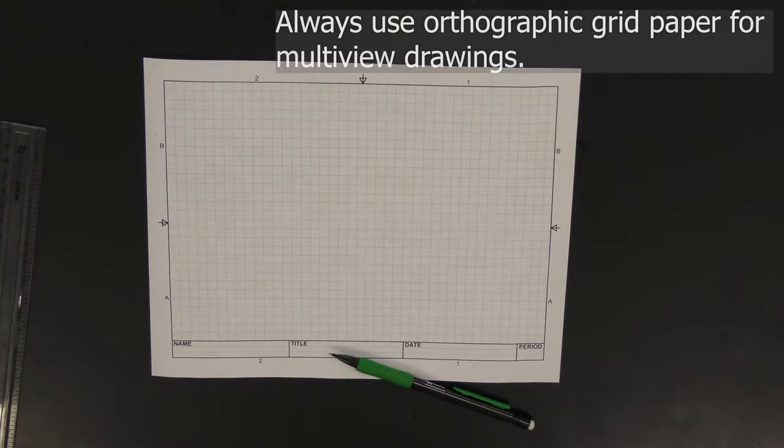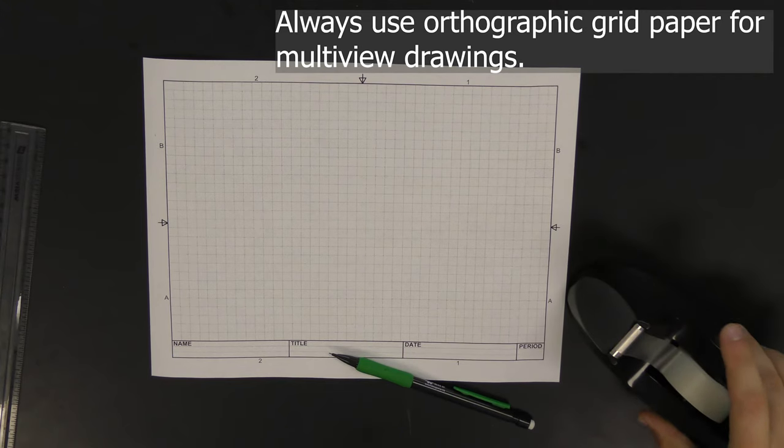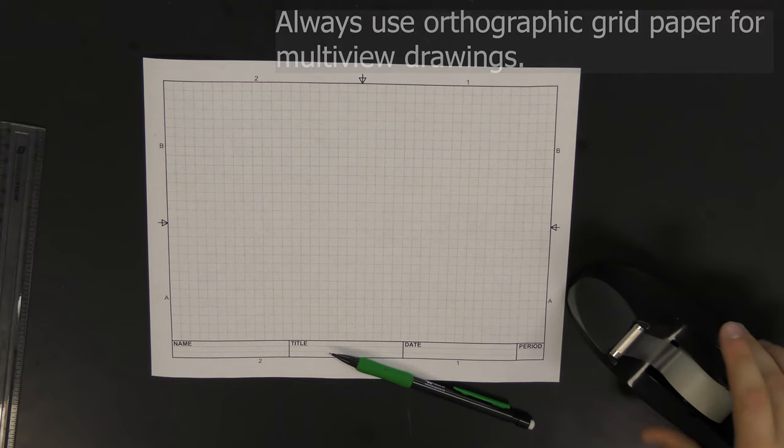Okay, so when we're starting multi-view drawings, it's really important that we use orthographic graph paper. Make sure that you're not using isometric paper.